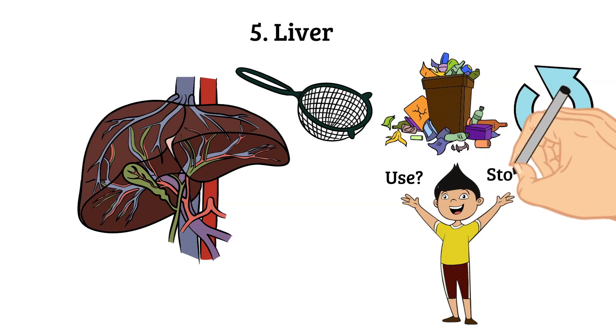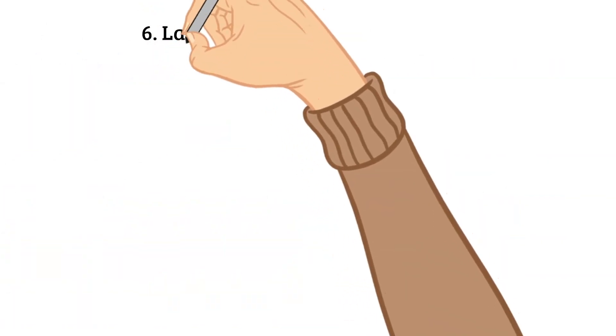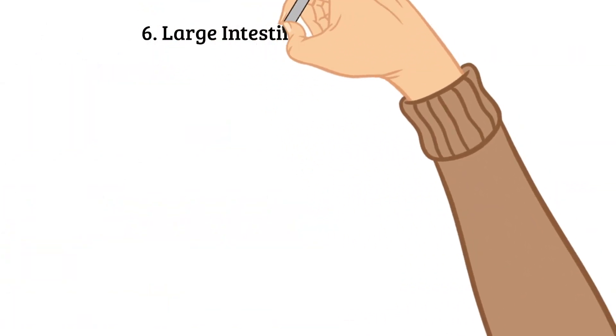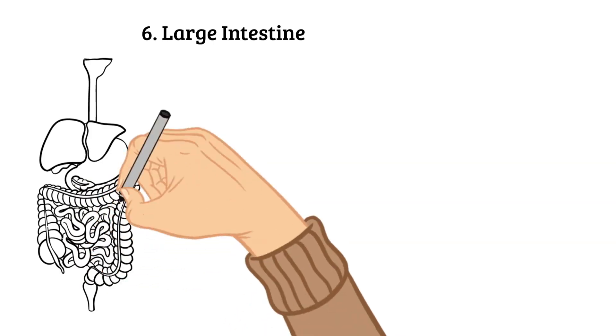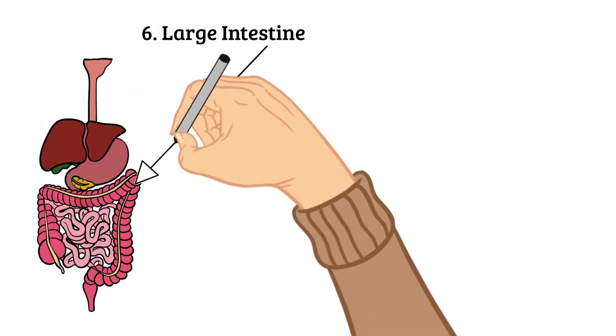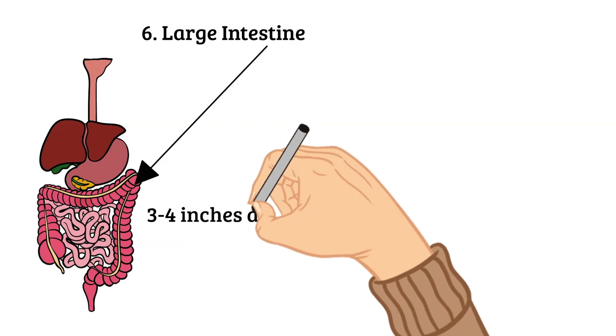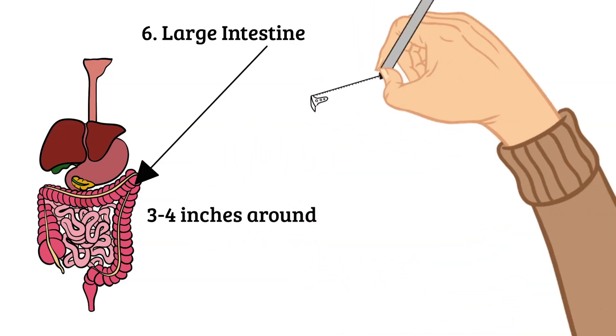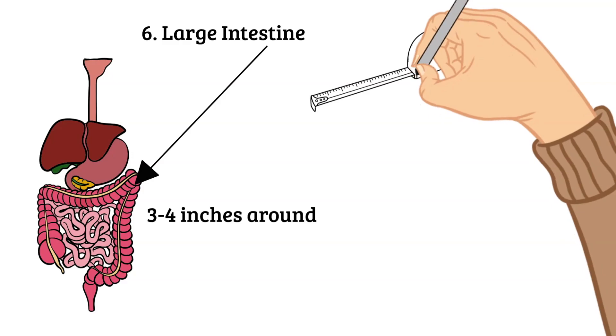Next up and last is our large intestine. It is three to four inches around, and this makes it fatter than the small intestine. Like the small intestine, it is packed into the body, and if stretched out, it would measure about five feet long.